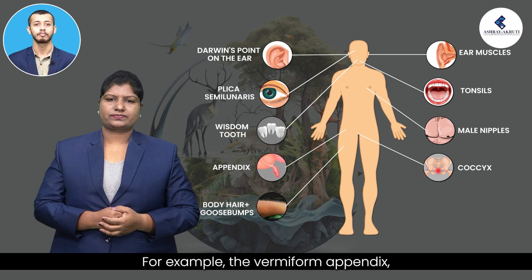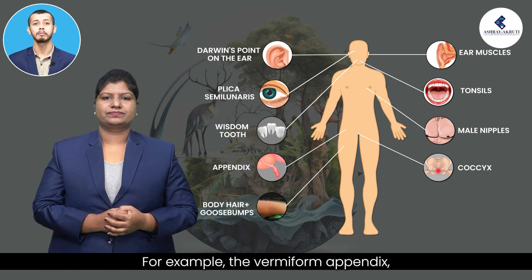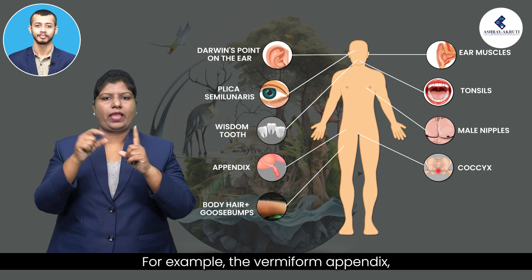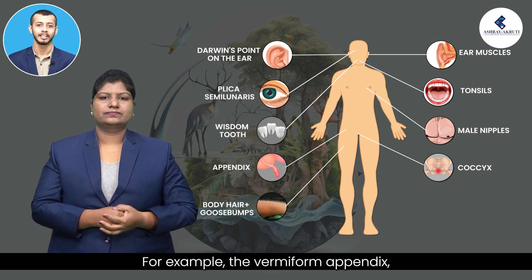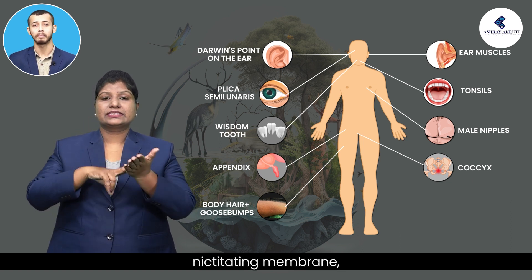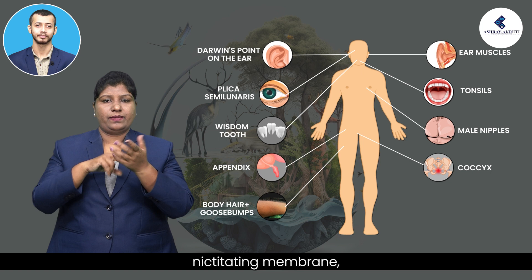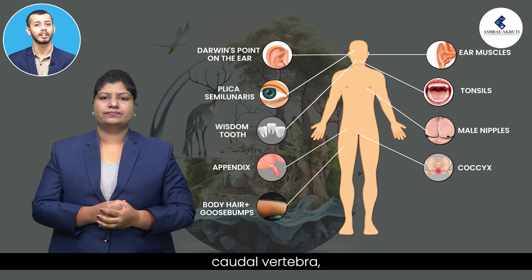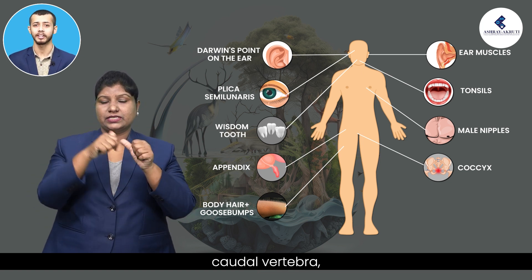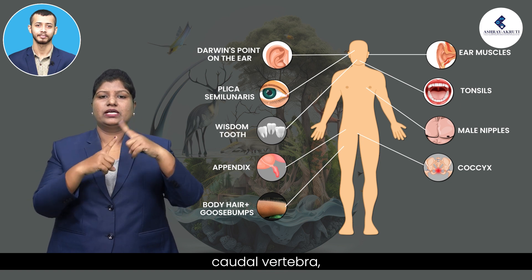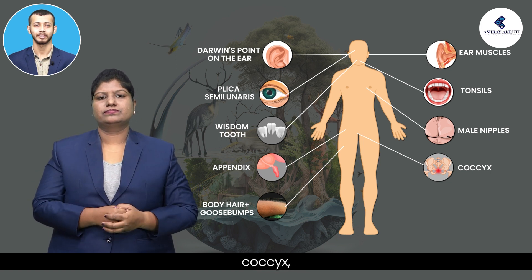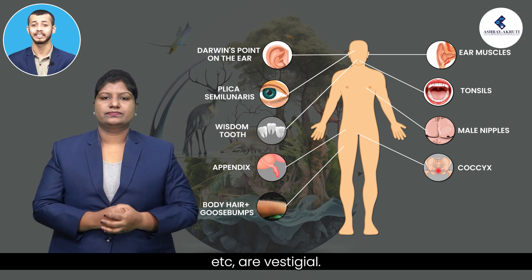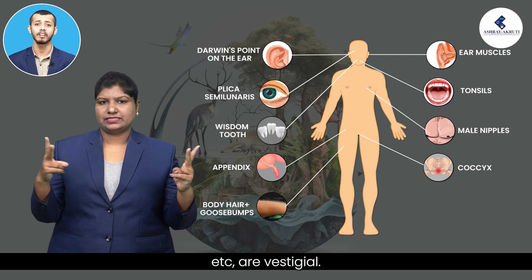Examples of vestigial organs in humans include the vermiform appendix, the nictitating membrane, the caudal vertebrae, and coccyx, among others.